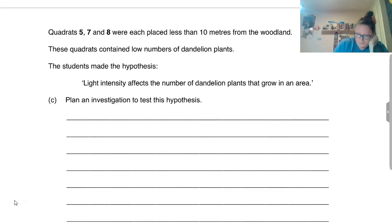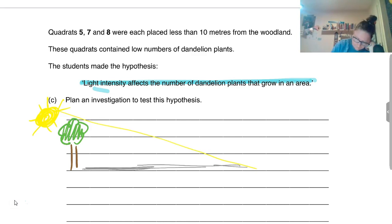Quadrats five, seven, and eight were each placed less than 10 meters from woodland. So if we imagine this scenario here, we've got some woodland. Some quadrats were placed quite near this woodland. What we need to do is come up with some sort of plan that's going to test this hypothesis: light intensity affects the number of dandelion plants that grow in an area. Plan an investigation to test this hypothesis. This really is thinking about how conditions change away from this area. If we're thinking about the light intensity, we would expect if we've got sunshine, that it's going to shine like that and then that's going to leave this bit to be a bit shady.